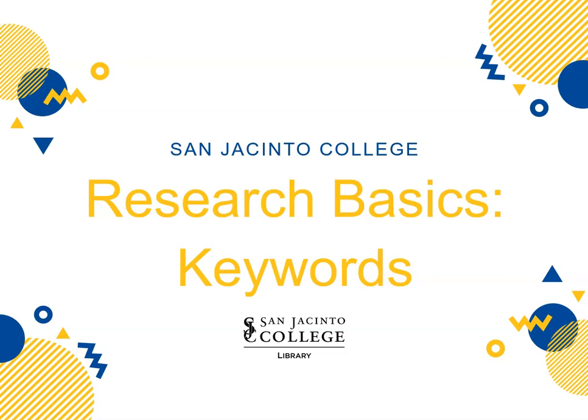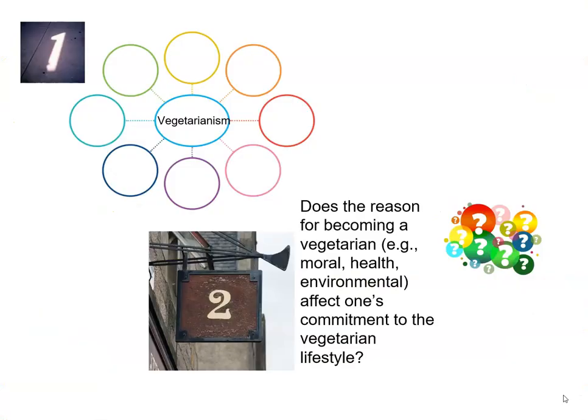What are keywords? This short video will answer that question and get you started on developing keywords to use in your research. Let's continue with our vegetarianism example. We used a concept map to help us think about our topic, which is vegetarianism. We've developed research questions that we want answered. Now we move on to how we go about finding the answers to those research questions. Step 1 in the research process is to have a vocabulary that describes what we're looking for.